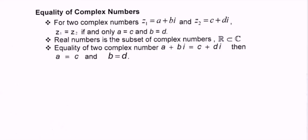Next, we're going to discuss the equalities of complex numbers. For two complex numbers z₁ equals a plus bi and z₂ equals c plus di, z₁ equals z₂ if and only if a equals c and b equals d. So a and c are equal and b and d are equal — only then can we say z₁ equals z₂. Real numbers are a subset of complex numbers.